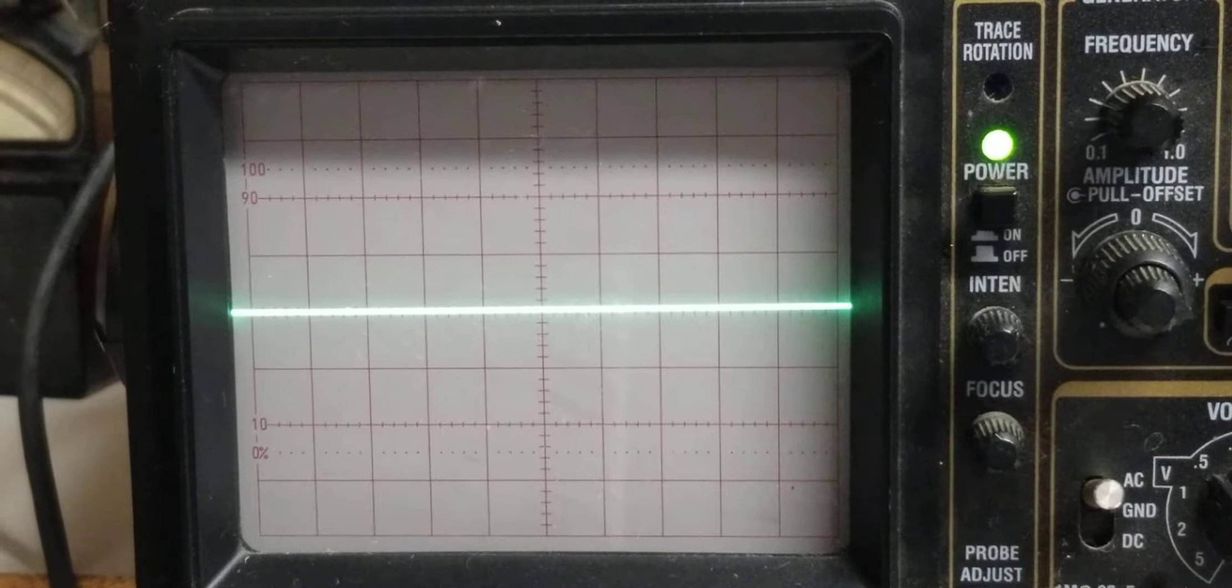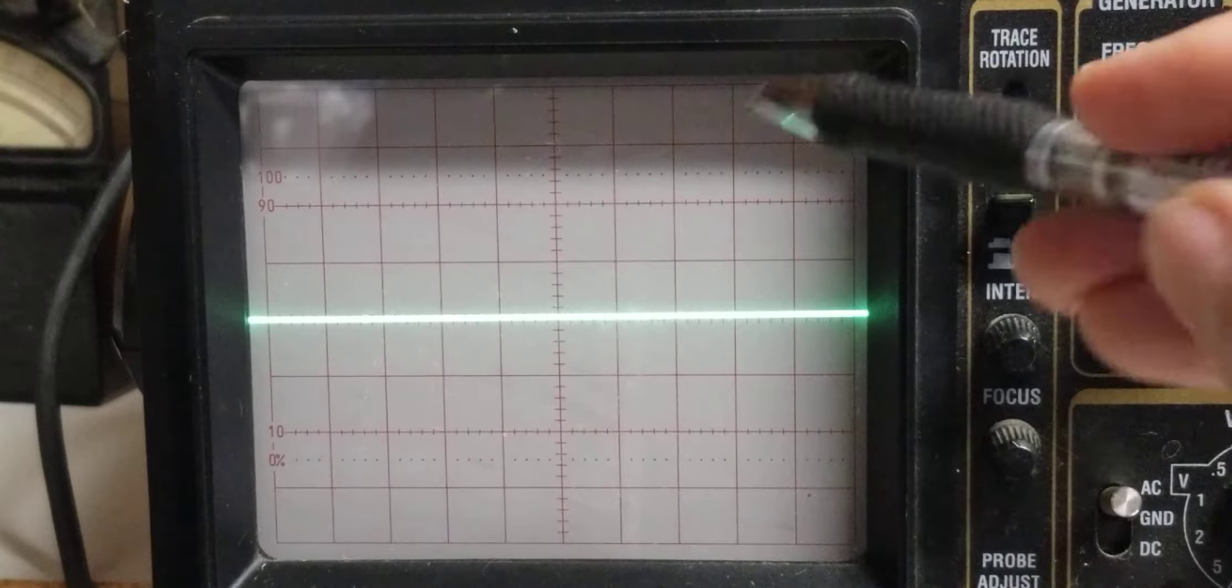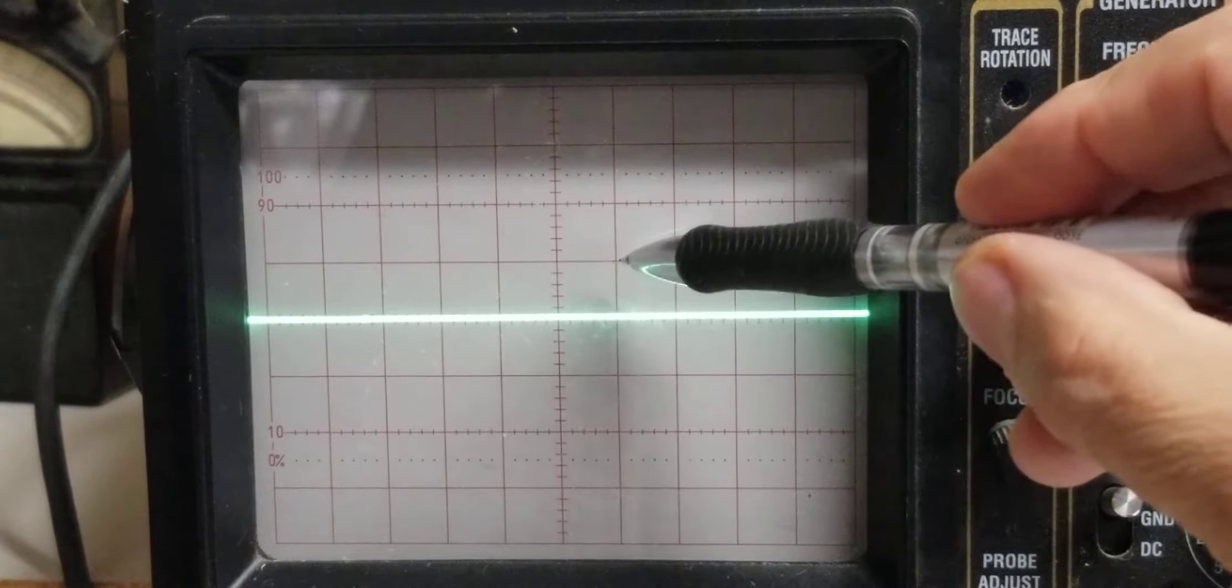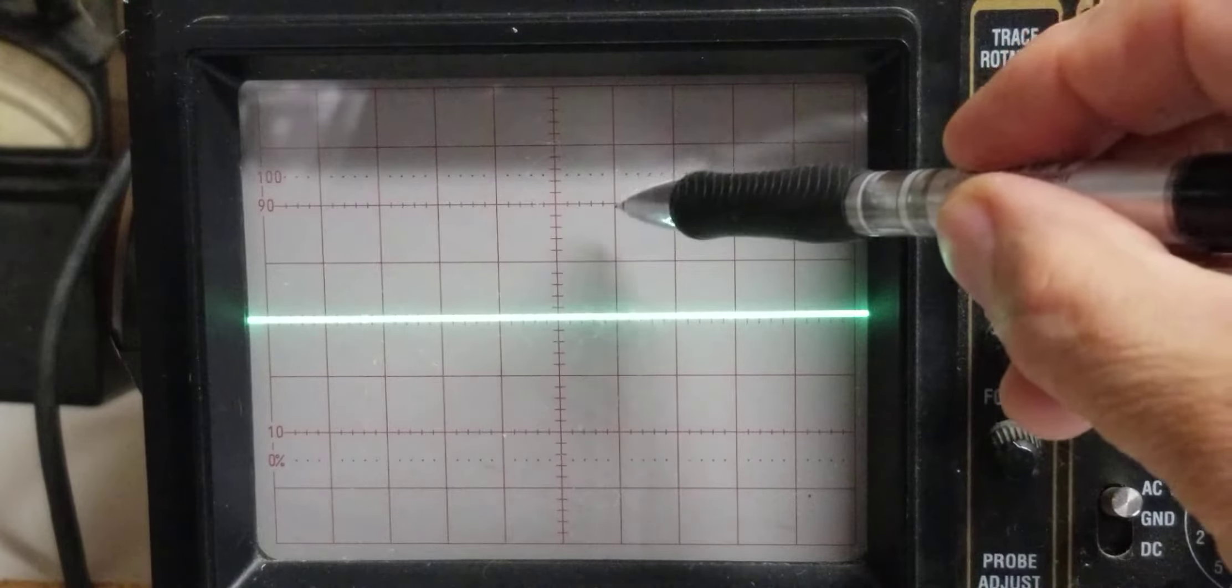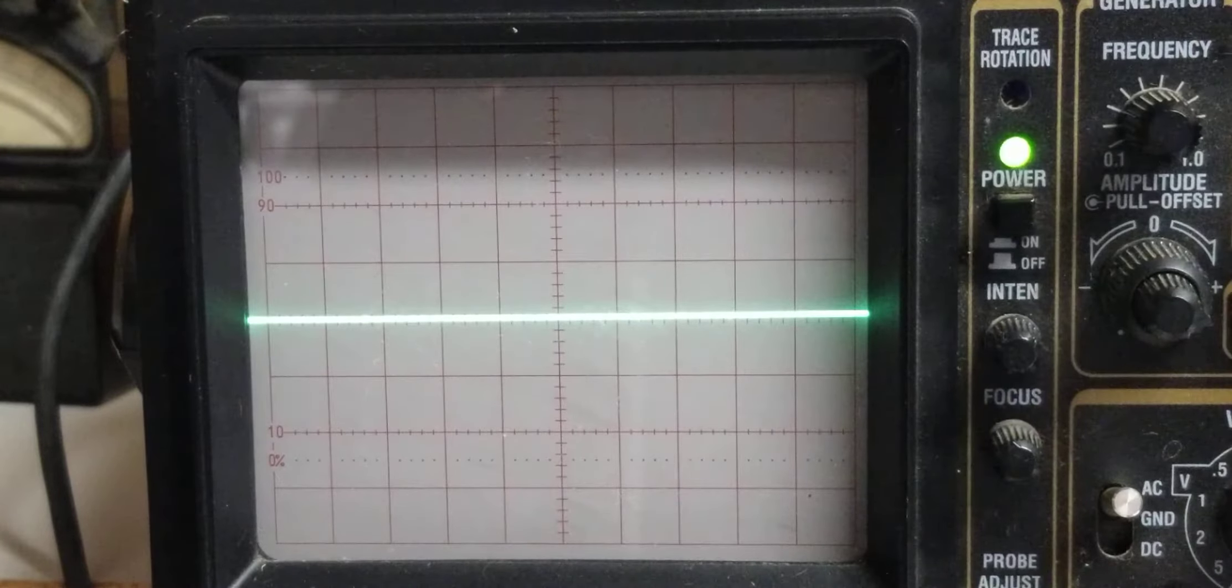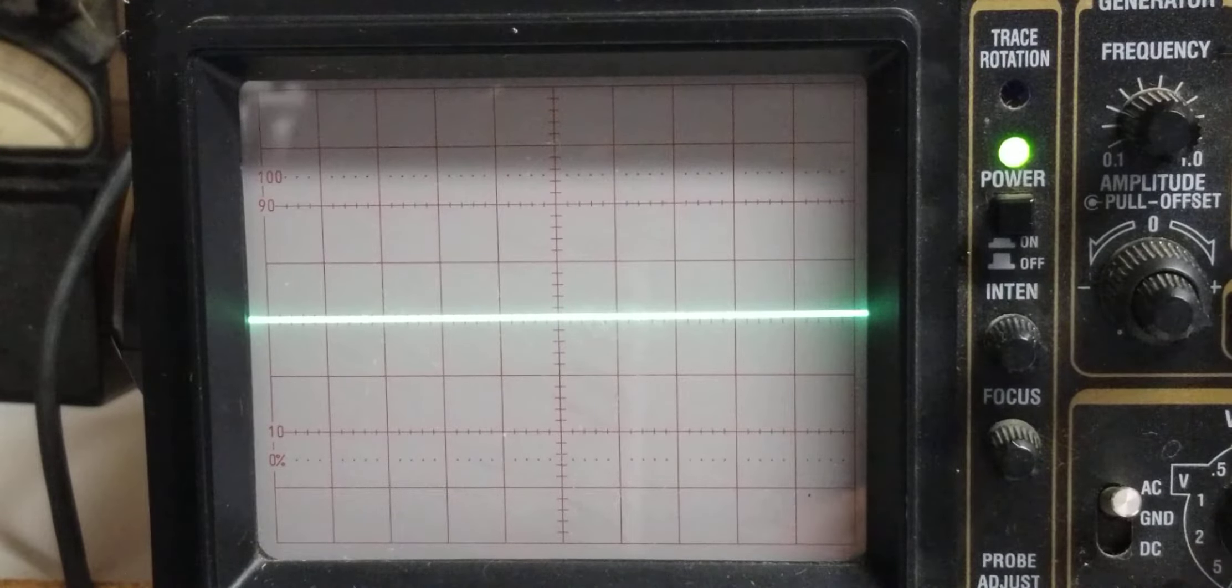This is Professor Alan Hong's oscilloscope lab concept number four. I'm going to talk about the vertical gain, which is adjusted in terms of volts per division. Each of these major lines is a division.